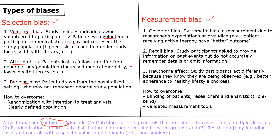Sometimes the NBME will ask how do we overcome this bias. The two main ways to overcome selection bias include randomizing patients and then performing an intention-to-treat analysis. As discussed in a previous lecture, intention-to-treat compares groups as they're initially randomized, while per-protocol analysis compares groups based on what treatment they actually ended up getting. Intention-to-treat analysis is better because it preserves the randomization and helps avoid potential selection biases.